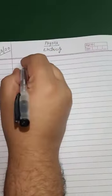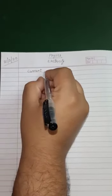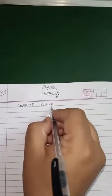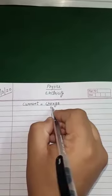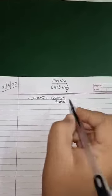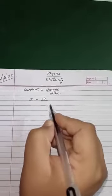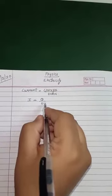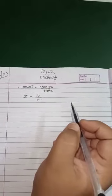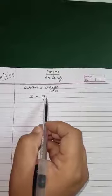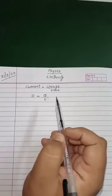Mathematically, how will we represent current? Current, as we have discussed, is the rate of flow of charge. So current is equal to charge per unit time. Symbolically, we will represent current by the letter I, charge by Q, and time by T. So we have got the formula for current: I is equal to Q by T.